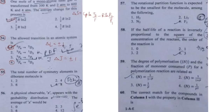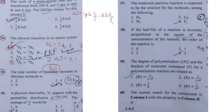Question 55 asks for the total number of symmetry elements in diborane, which has D₂h symmetry. The total number of symmetry elements is eight. Question 56 gives a probability distribution for a physical observable x and asks for the average value. The formula is the integral of x·f(x) dx from −∞ to +∞. I'm not entirely sure, but after working through it the answer should be option number three — the answer is six.